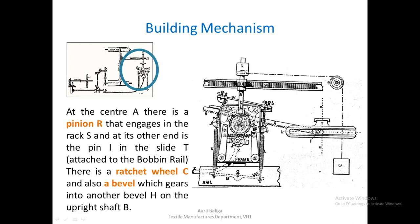Pinion R, which is behind this and shown as dotted lines, engages with the rack S. This is the rack S shown here. Its other end — pin I — is in the slide T which is attached to the bobbin rail.